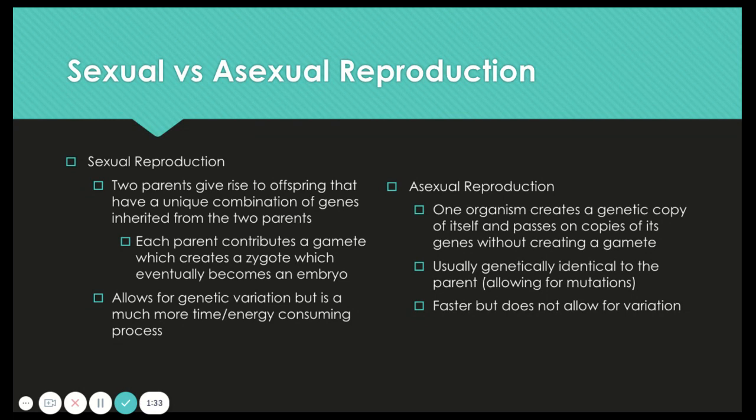Moving on to asexual reproduction. This is when one organism creates a genetic copy of itself and passes on copies of its genes without creating a gamete. The resulting offspring is usually genetically identical to the parent. There is a possibility for mutation, but it is not the same kind of variation as in sexual reproduction. It is faster, but it is an exact copy pending mutations.